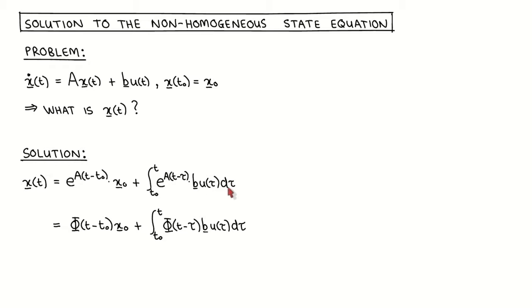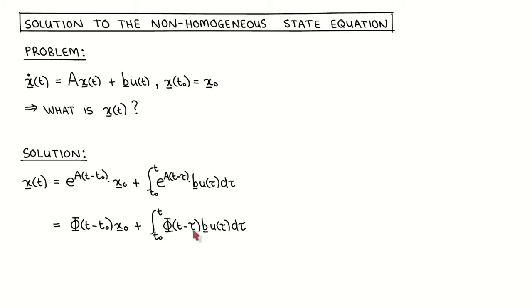The integration variable is tau, and the variable t is therefore considered to be a constant from the view of the integral. From the definitions of a previous video, we can recognize the matrix exponential of A times (t minus t0) as the state transition matrix with argument t minus t0, and the matrix exponential of A times (t minus tau) as the state transition matrix with argument t minus tau.